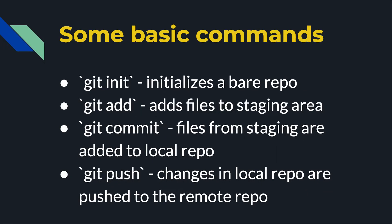Here are some basic commands — this is a whirlwind overview. There are certainly a million tutorials on the internet, but I'll introduce some of these basics. The git init command will initialize a bare, empty repository that you could then add files to. Then using the git add command will allow you to add files to the staging area — when you're done working on a file from your working directory, you can put it in the staging area. The git commit command will allow you to take files from the staging area and add them to your local repo.